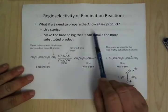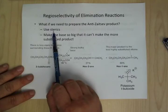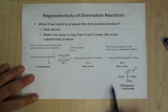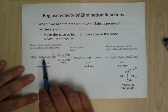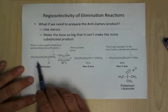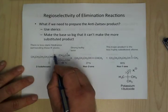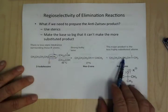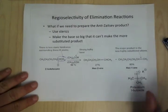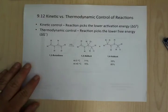If you want to prepare the anti-Zaitsev product, you can use sterics to your advantage. If you use a very bulky base — potassium t-butoxide is a classic large base — there's a lot of steric bulk, making it difficult for the base to come in and grab the more hindered hydrogen. So it grabs the easiest hydrogen it can get. That gives you the anti-Zaitsev product. By switching the base, you can steer towards the less substituted product.